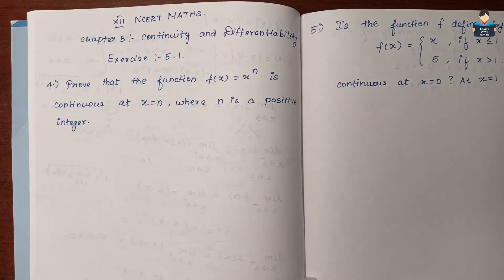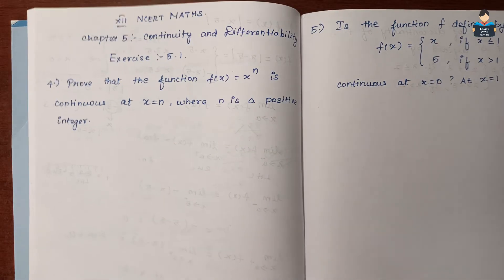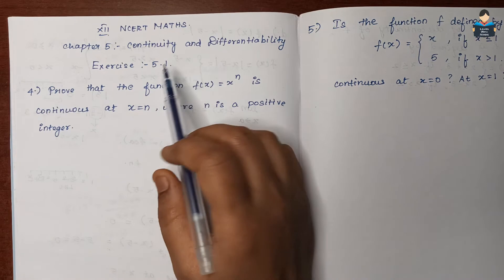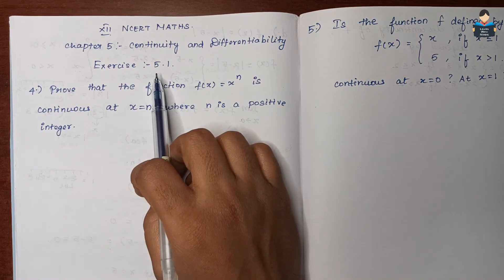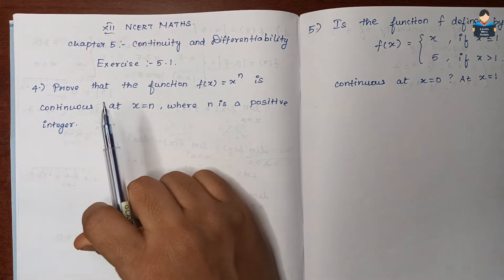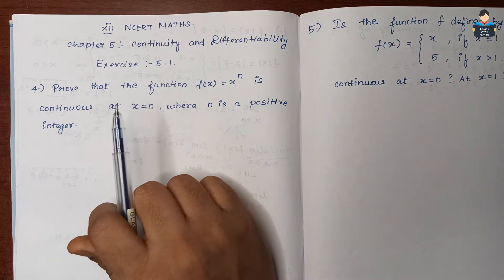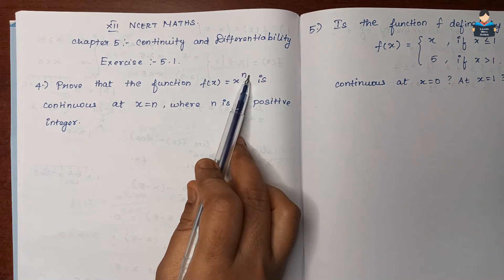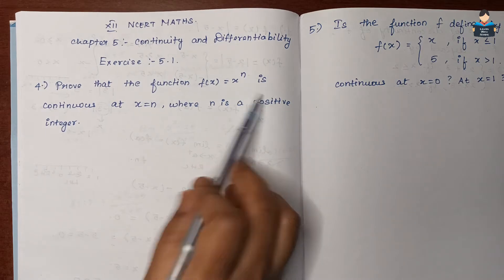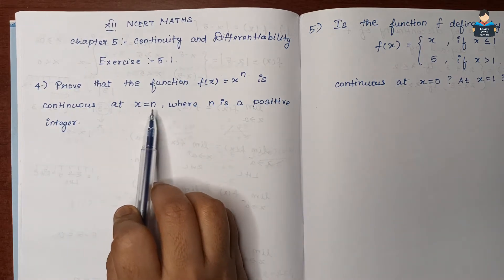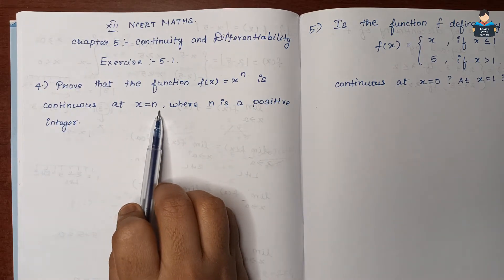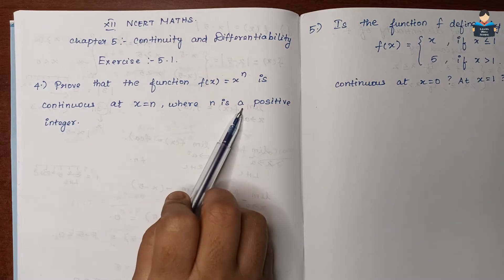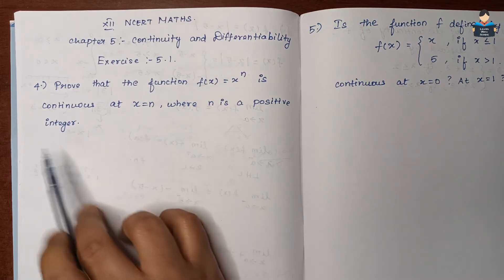Hello everyone, welcome to the channel. In this video, we look at 12th standard NCERT Maths Chapter 5, Continuity and Differentiability, Exercise 5.1, 4th question. We have to prove that the function f(x) = x^n is continuous at x = n, where n is a positive integer.